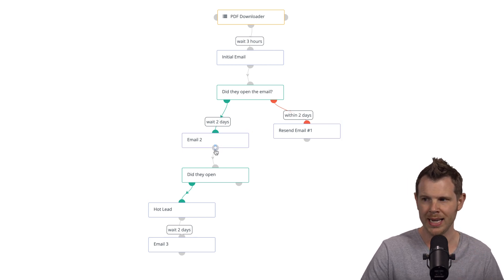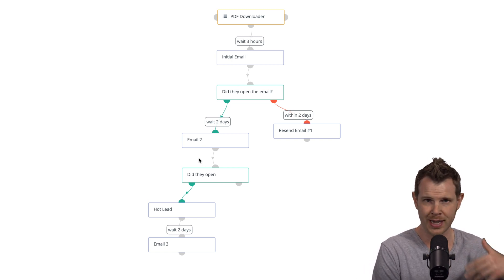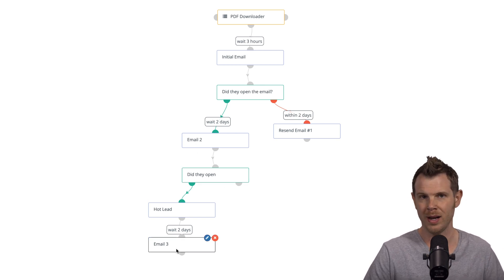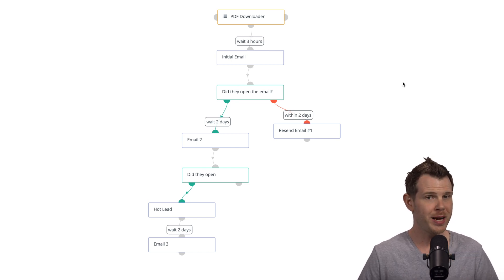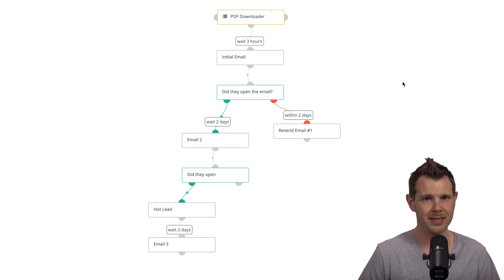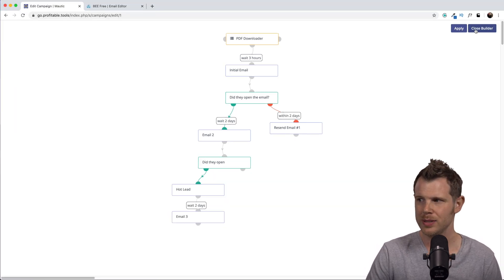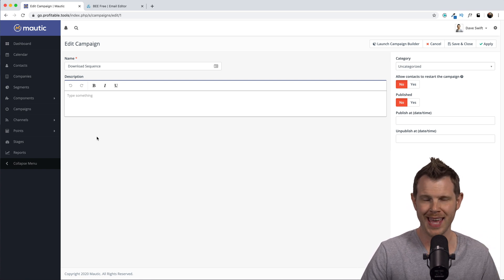If they open both Email One and Email Two, we add the 'hot lead' tag, which could trigger an entirely different sequence of events — we could end the campaign there, or send one additional email as well. You can see the potential for very complex email campaigns in Mautic, though it can certainly be as simple as firing off 10 emails in 10 days without paying attention to clicks or opens. Let's close the builder.